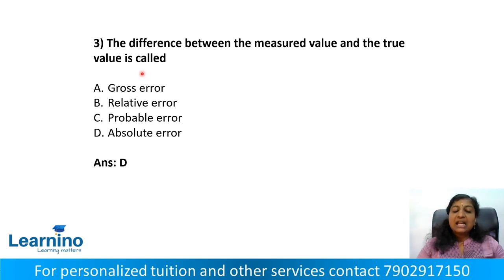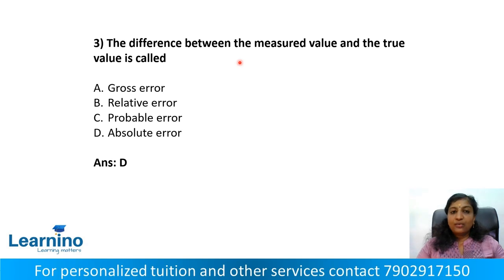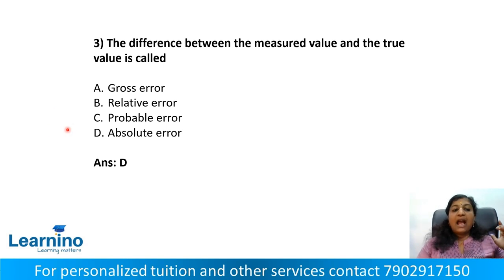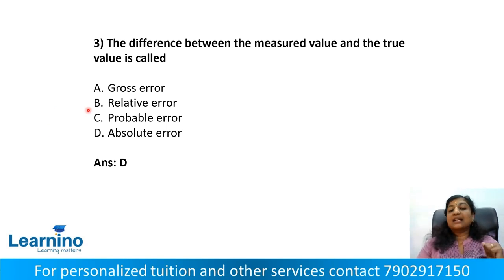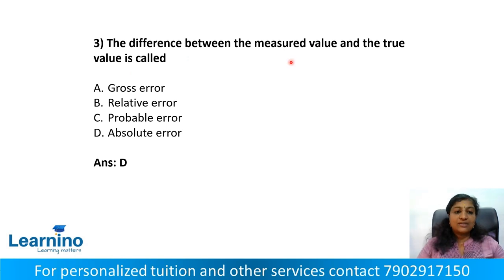Question number 3. The difference between the measured value and true value is called: option A, gross error; option B, relative error; option C, probable error; option D, absolute error. The correct answer is option D — the difference between measured value and true value is called absolute error.